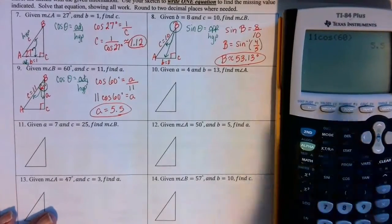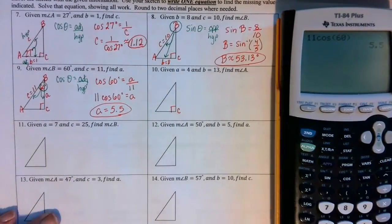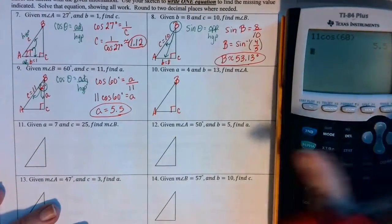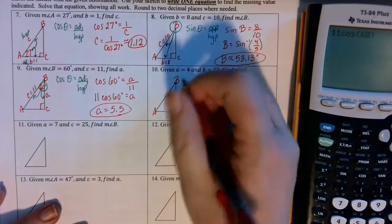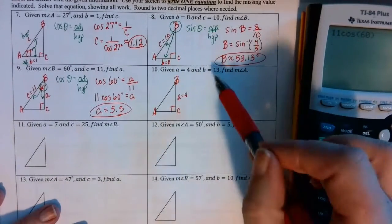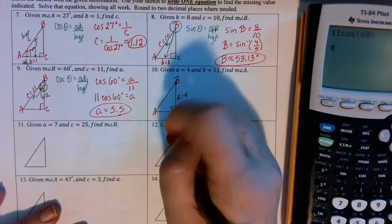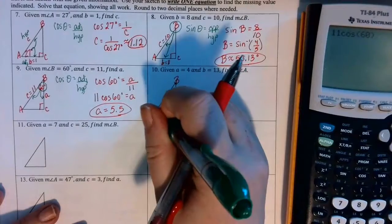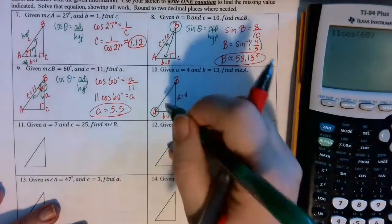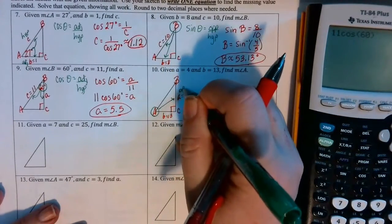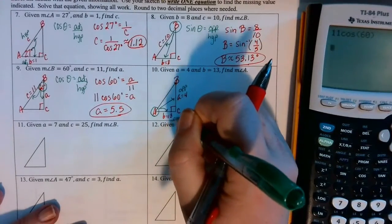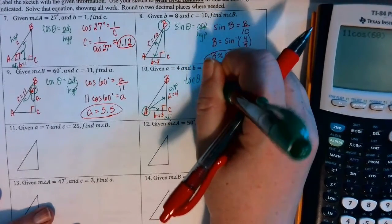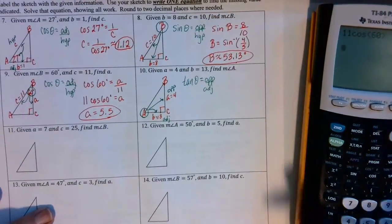In number ten, the right angle is capital C. Side a must be opposite angle A, so little a equals 4, and side b must be opposite angle B, so little b equals 13. We're trying to find the measure of angle A. We know the side opposite and the side adjacent, and tangent of theta is the ratio opposite over adjacent.